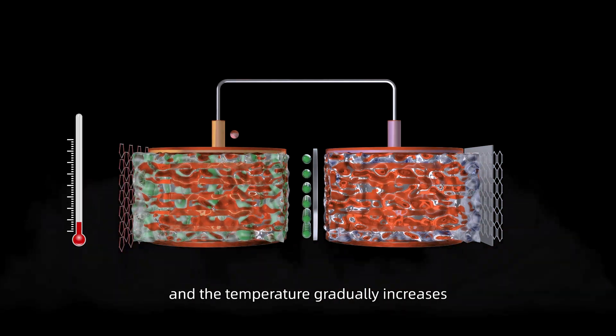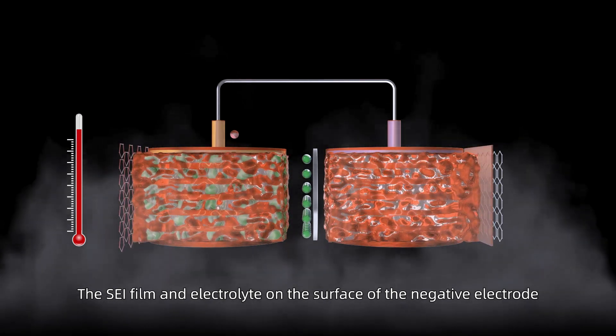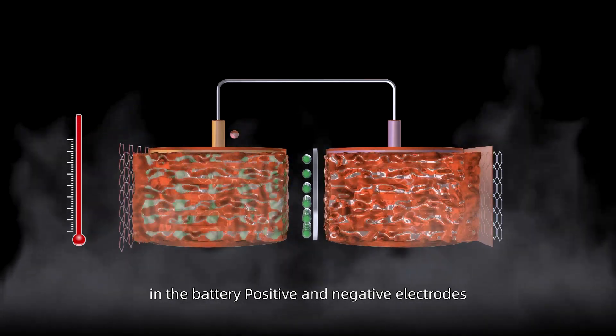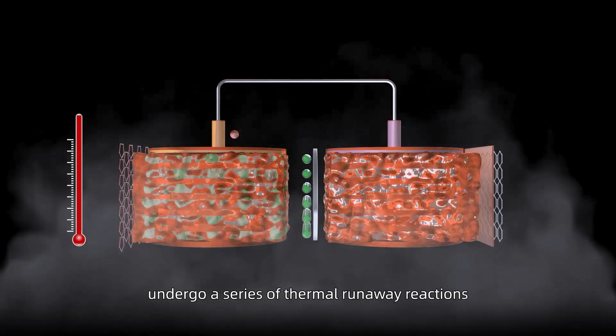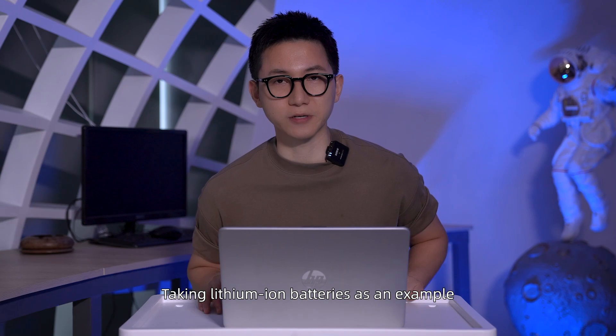the heat cannot diffuse and temperature gradually increases. The SEI film and electrolyte on the surface of the negative electrodes undergo serious thermal runaway reactions at high temperatures. Taking lithium-ion batteries as an example,